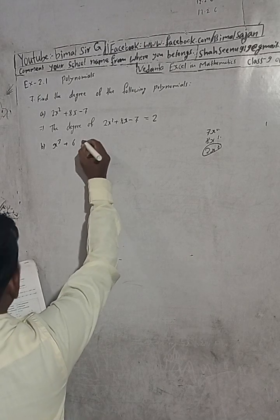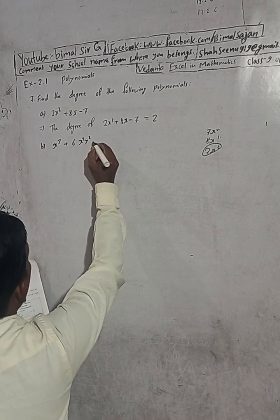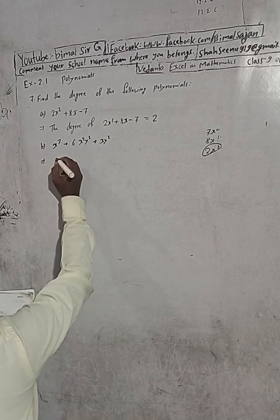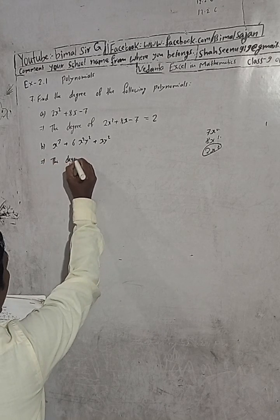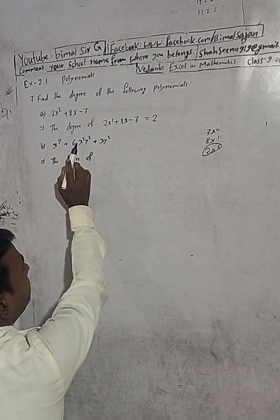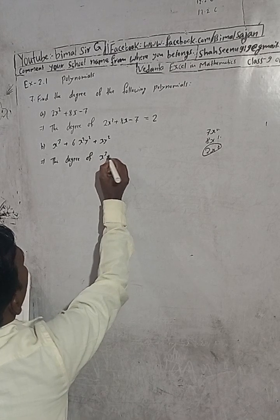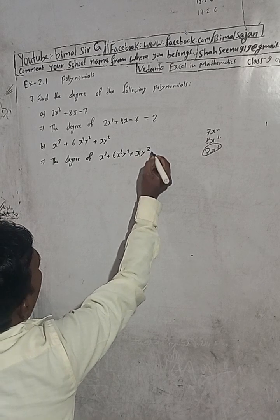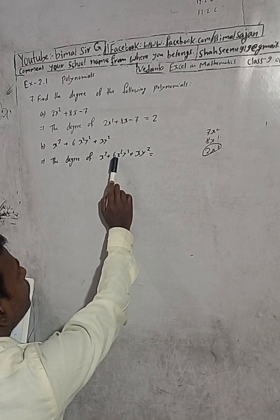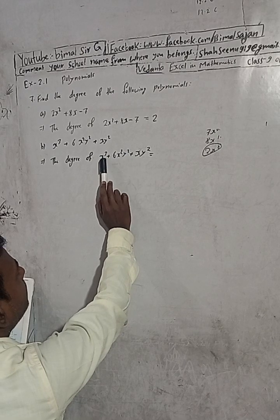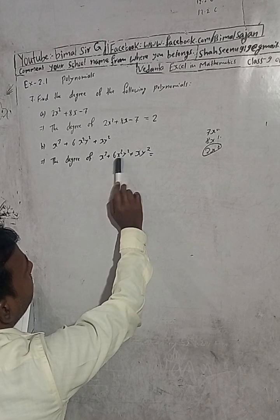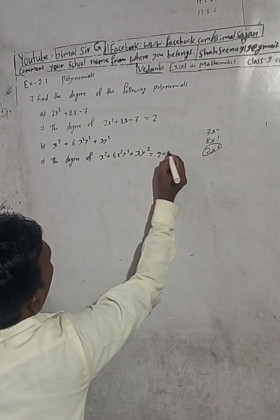For x cubed plus 6x squared y squared plus xy squared: here you can see the power of the first term is 3. But in the second term there are two variables — x has power 2 and y has power 2, so 2 plus 2 equals 4. And in the third term, x has power 1 and y has power 2, so that is 3. The highest power is 4, so the degree of this polynomial is equal to 2 plus 2, which is 4.